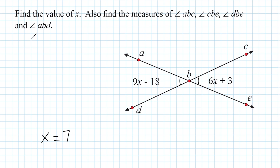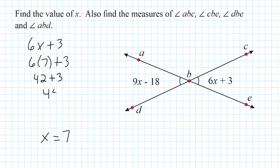We write the expression 6X plus 3 and substitute our variable with 7, then solve. 6 times 7 is 42, plus 3 is 45. So the angle measure of CBE is equal to 45 degrees.